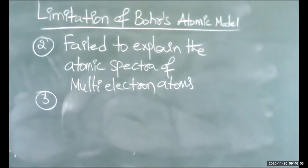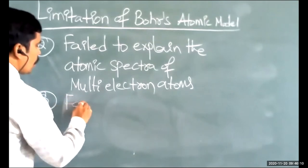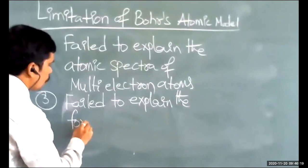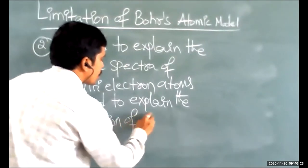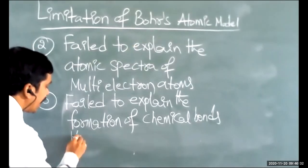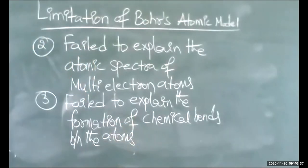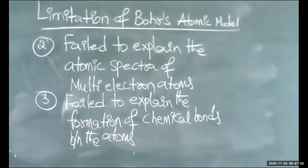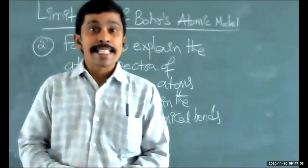A third drawback is that Niels Bohr failed to explain the formation of chemical bonds between atoms. These are the main limitations of Niels Bohr's model of the atom. So in the success of Bohr's atomic model, we mainly focus on two formulas, and the limitations include failure to explain fine spectra, multi-electron atoms, and chemical bond formation.